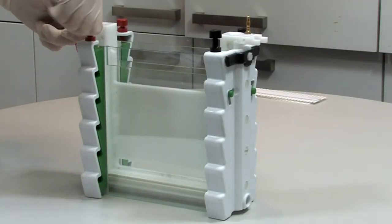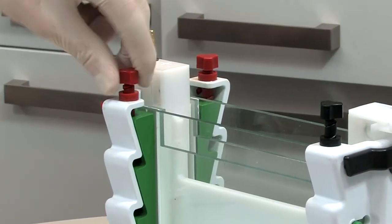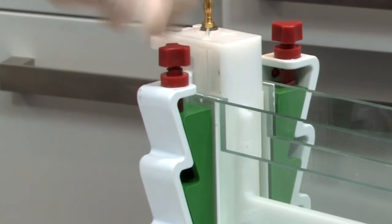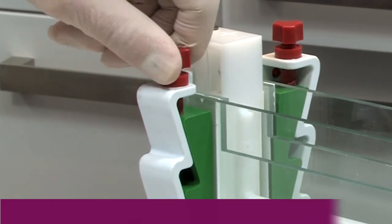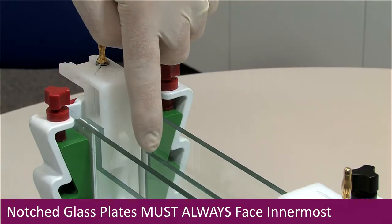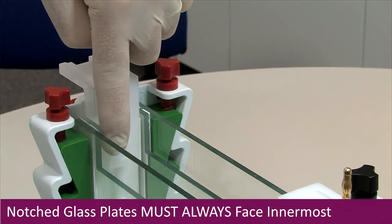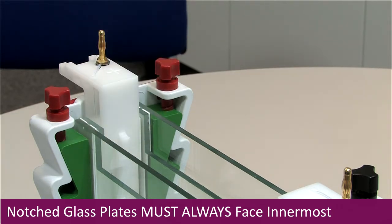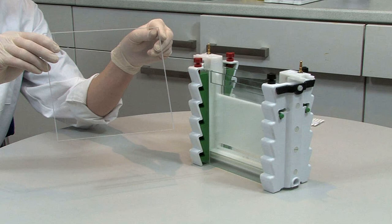Turn the red and black screws. These will push down the green clamps to secure the gel sandwich against the gasket. Insert the dummy plate if only casting and running one gel.